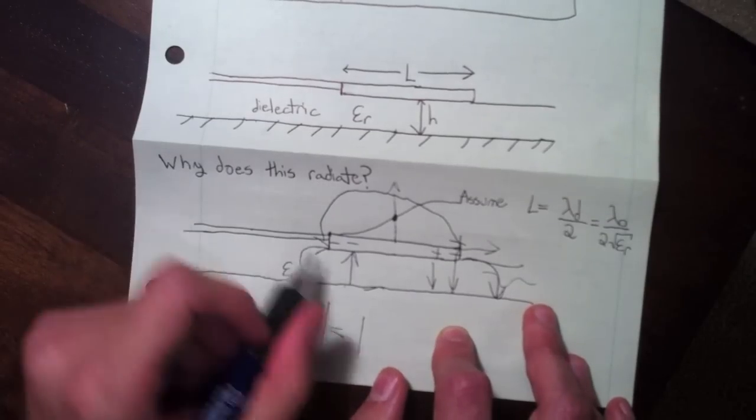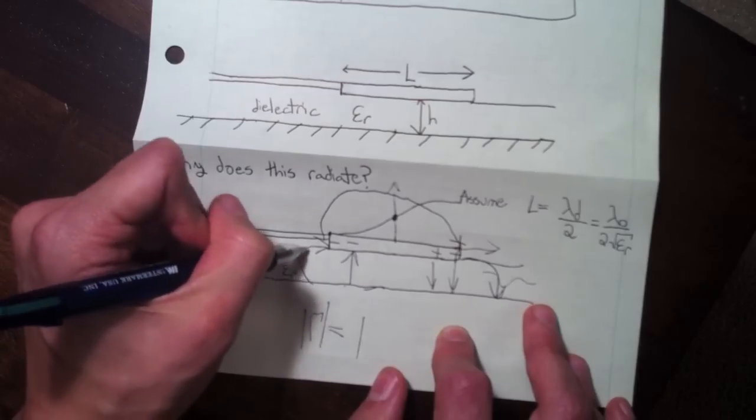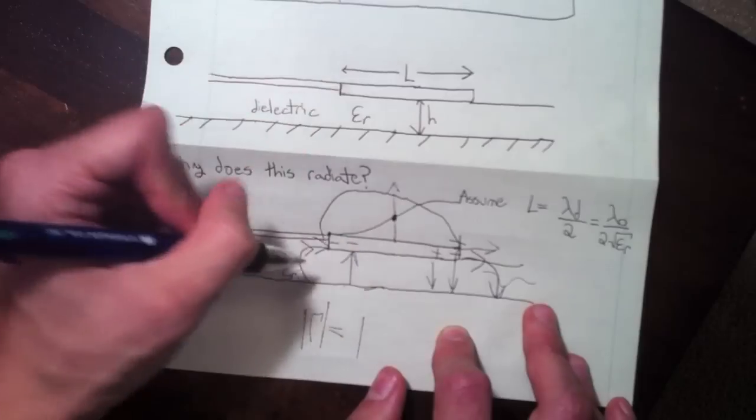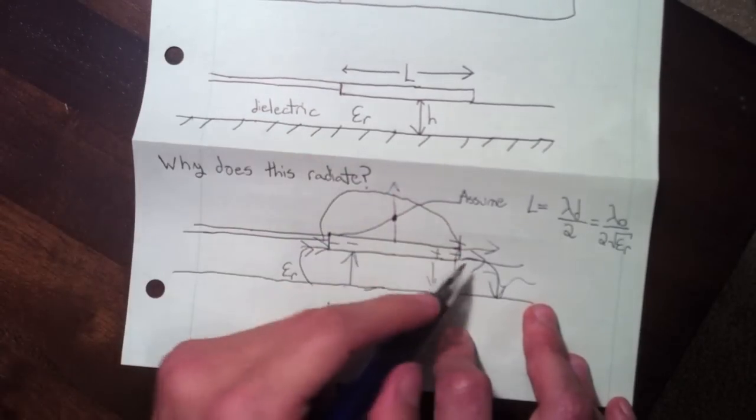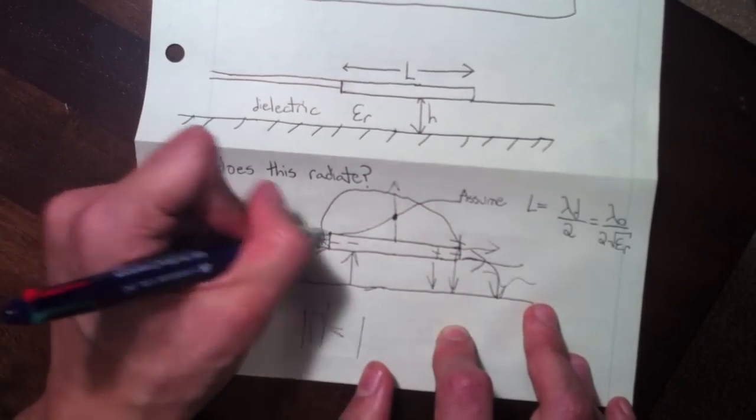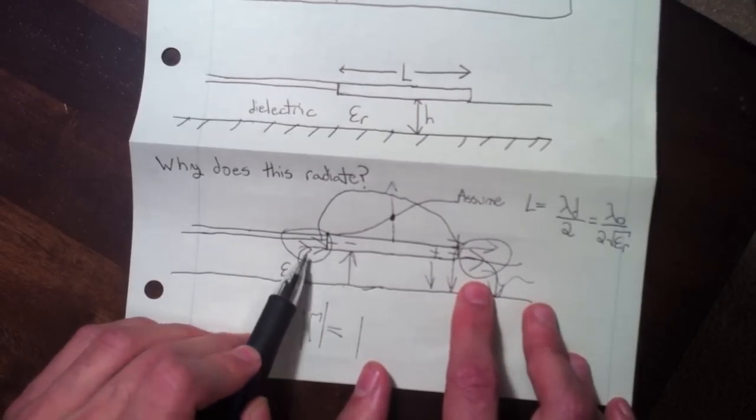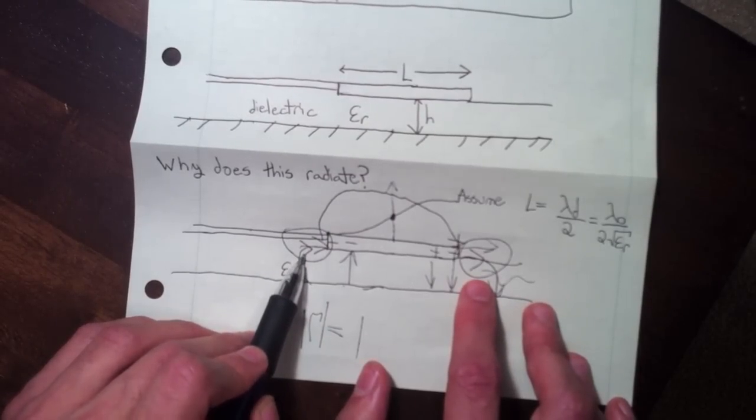Now these fringing fields have a component that is horizontal here, and these components are going in the same direction. So it's actually these fringing fields, the horizontal components of the fringing fields adding up in phase, which is giving rise to radiation.